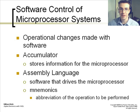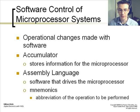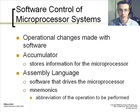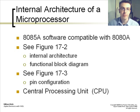The operation changes are made with software. The accumulator is part of this — it stores information for the microprocessor like a register would. The assembly language is the software that drives the microprocessor. Microprocessors can also use C language or Java language in addition to assembly language. The mnemonics of assembly language are known as the abbreviation of the operation to be performed — the 2-digit hex code. The 8085A software is compatible with the 8080A, a simple microprocessor compatible with much of the 8000 series.